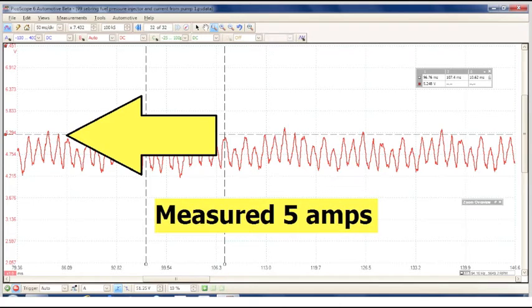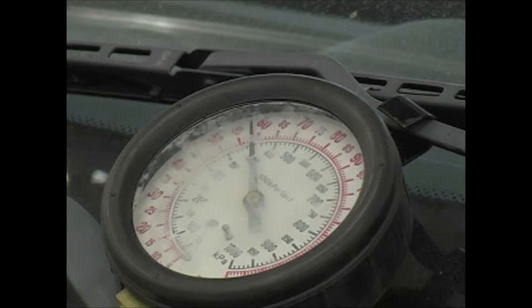We can use this pattern to measure overall current draw. In this case, it's about five amps. That current draw often equates to the amount of fuel pressure in the system. General rule of thumb for many systems is one amp for every 10 psi of fuel pressure.